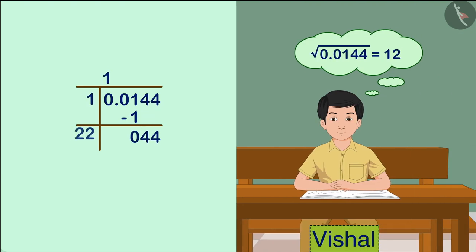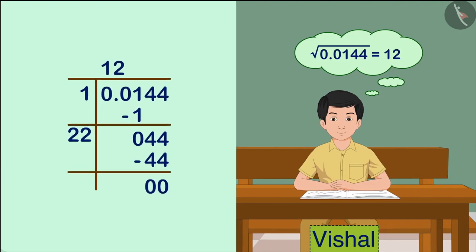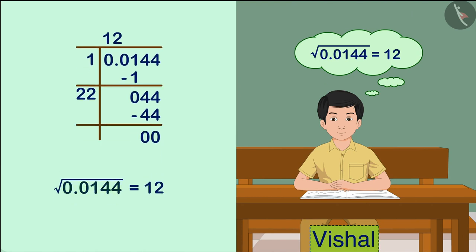Vishal derived the square root of this number in this way. Here, the square root of this number is equal to a whole number. This means that Vishal's answer is incorrect.